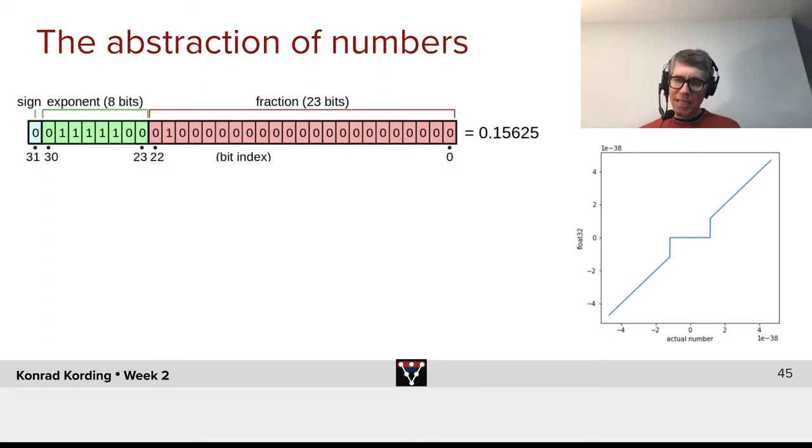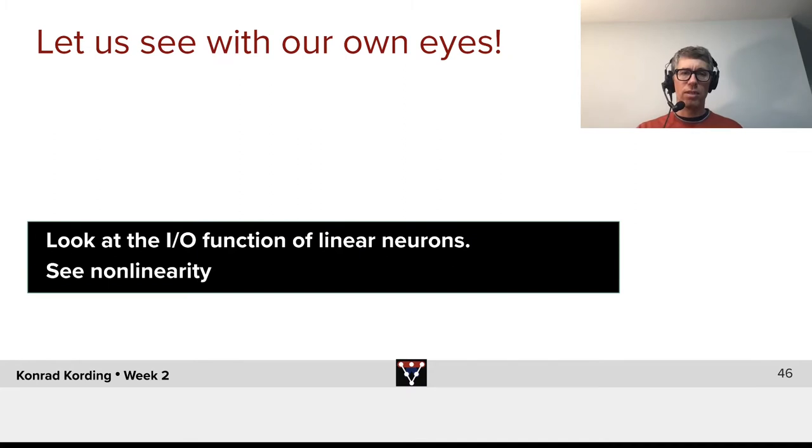What that means is that if you zoom all the way in, it doesn't actually look linear. And a breakdown of abstractions is arguably very important. It leads to a lot of failures in deep learning, and it's actually very interesting.